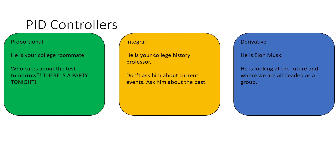These three components have individual personalities and behaviors. Proportional is like your college roommate — he's in the here and now. Why study for a test or get a good night's sleep? There's a party going on right now. He's not saving money in his 401k or planning ahead. It's just: I'm hungry right now, I want to eat. Then integral — this is like the college history professor who doesn't know much about what's going on right now, but he's keyed into the past.